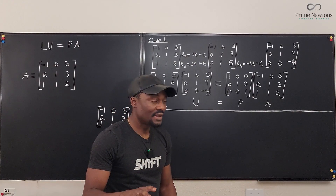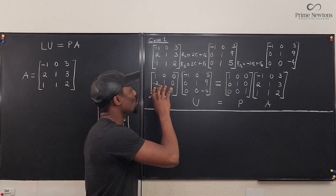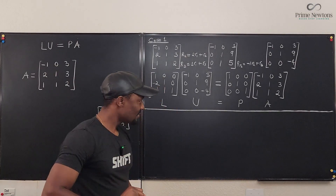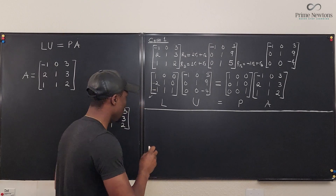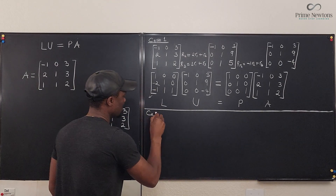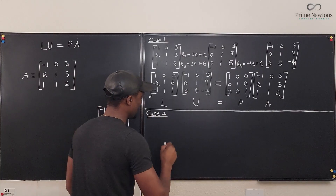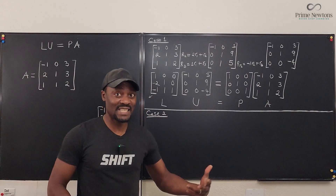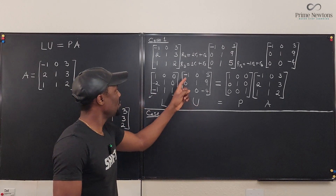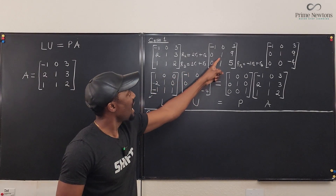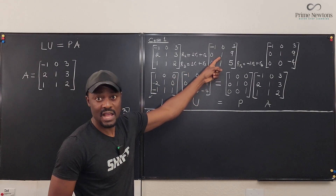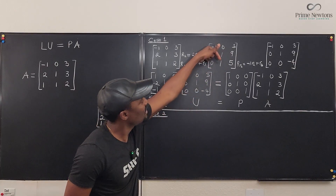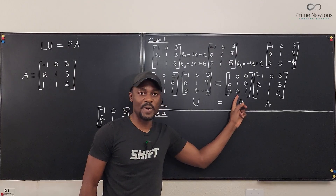Now let me show you what happens when you choose to switch rows — case two. Sometimes you choose to switch rows; sometimes it is necessary because you don't have an anchor. For example, if there was a zero in the pivot position, it would be mandatory to switch two rows, and then you record that in P.